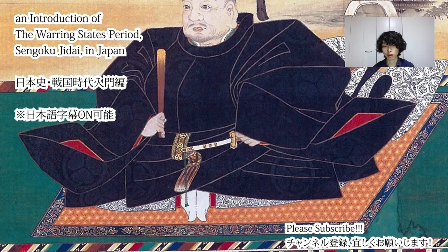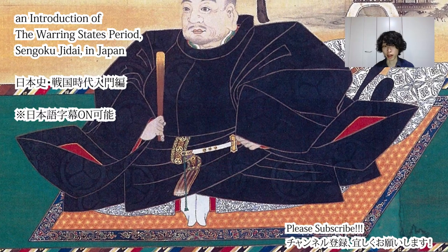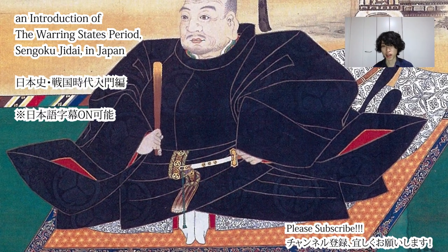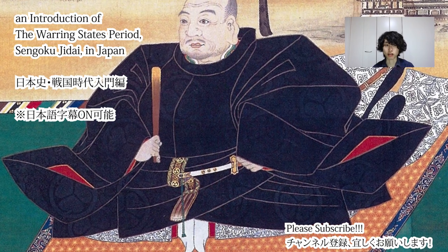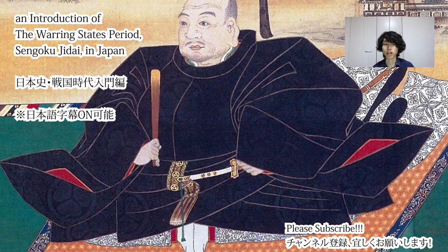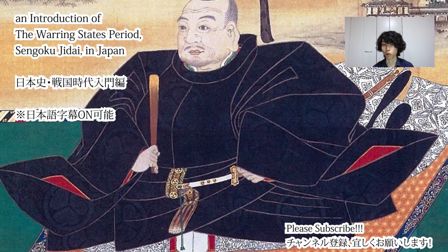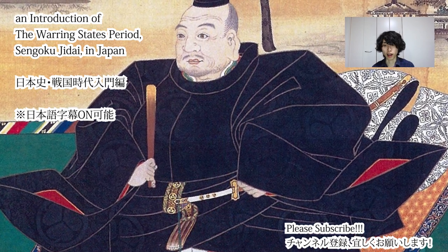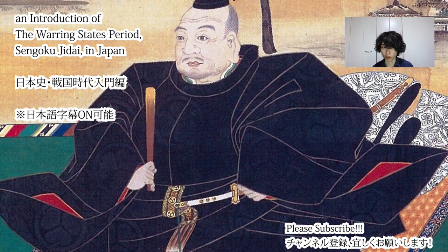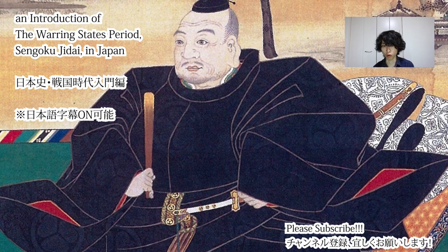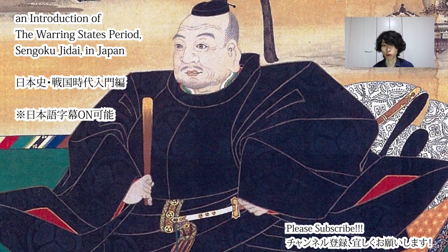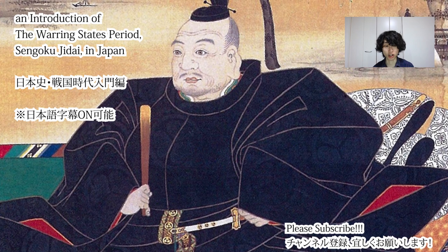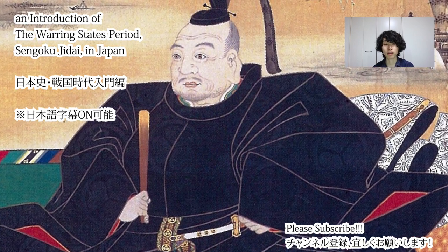The third unifier is Tokugawa Ieyasu. He eventually achieved the perfect unification of Japan and established the Edo shogunate, also called the Tokugawa shogunate, in Edo — now Tokyo. He was the first shogun of the Edo shogunate, which brought peace to Japan for the next 260 years until 1867.